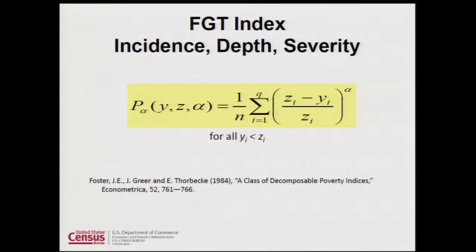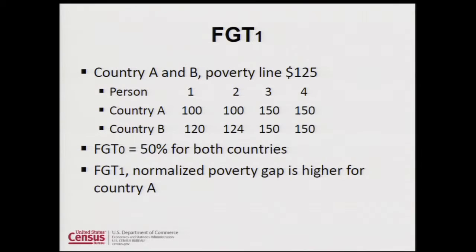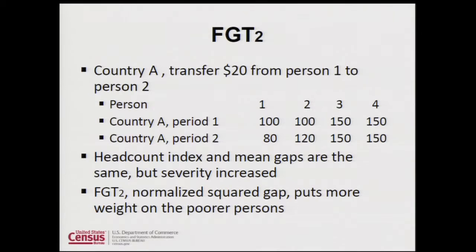If alpha is equal to one, we have a normalized poverty gap — we're looking at the distance between the poverty line and the incomes people have. We can see that if we're calculating gaps in this example, country A looks worse off than country B, because we're now accounting for the distribution of incomes below the poverty line, even though the poverty rates are the same. If alpha equals two, we're calculating a severity measure, allowing us to be more concerned about the poorest person in the distribution.